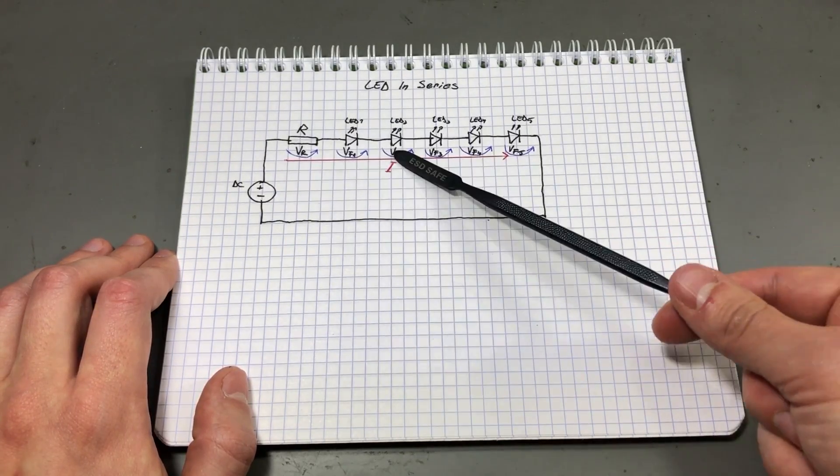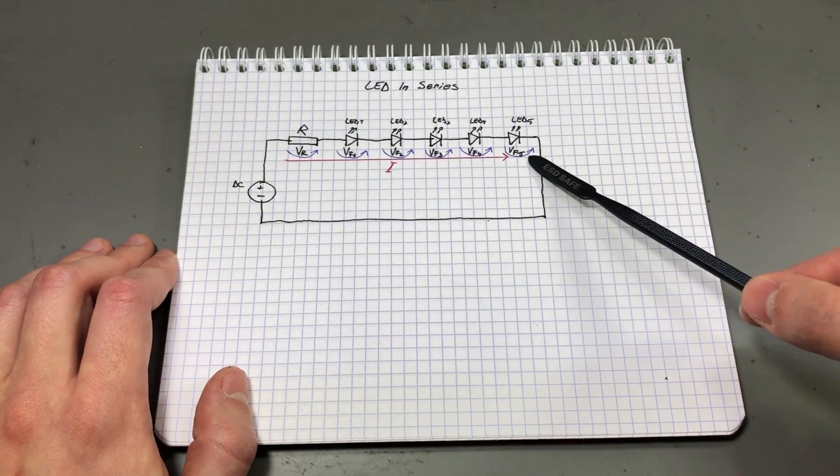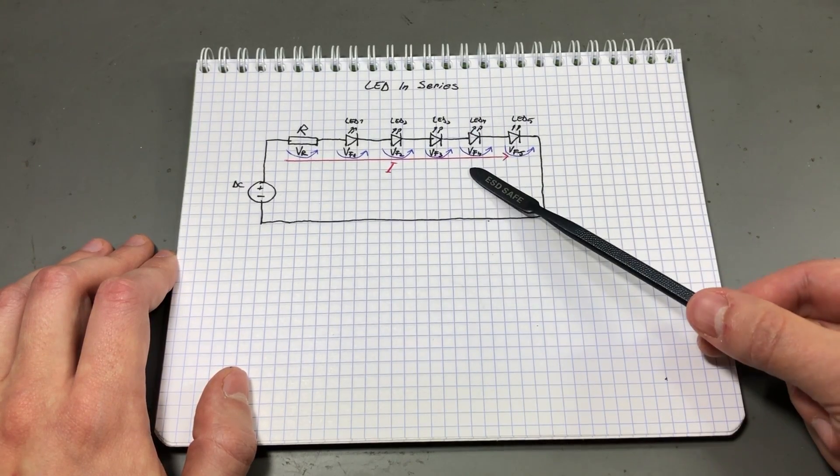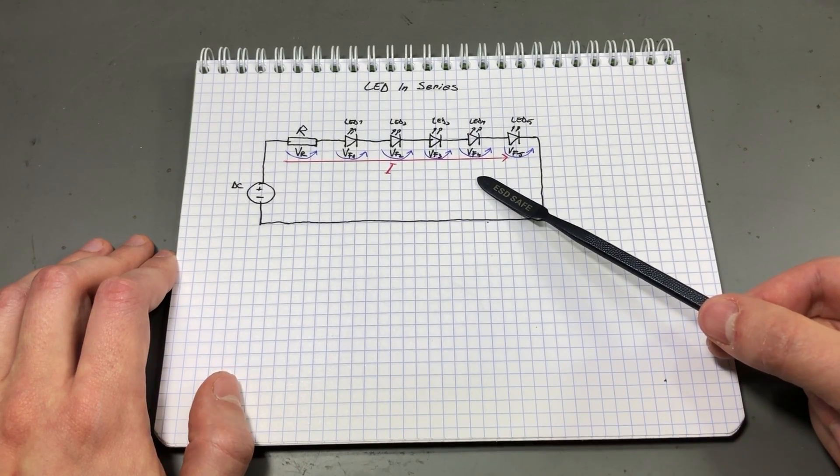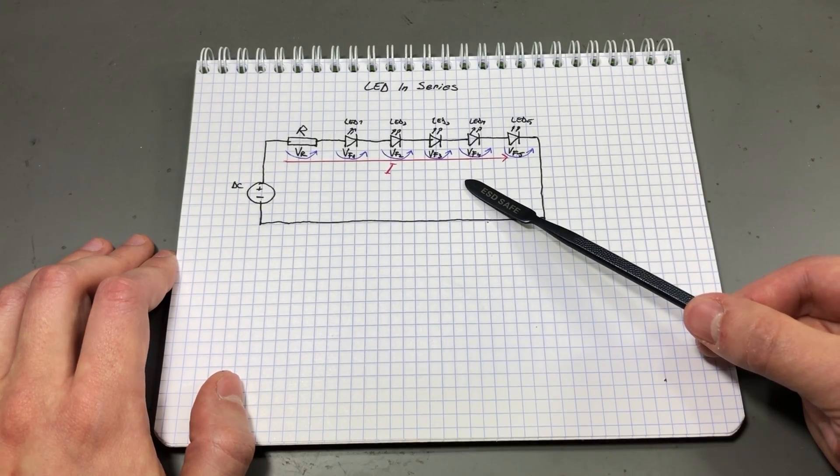And you would think now the problem is solved because we have this I current which is the same across all of our devices in this series string. But the problem is only partially solved because of another property of diodes that also applies to LEDs as well.